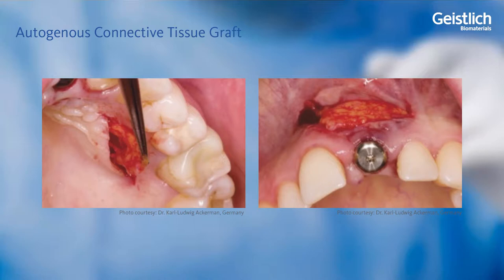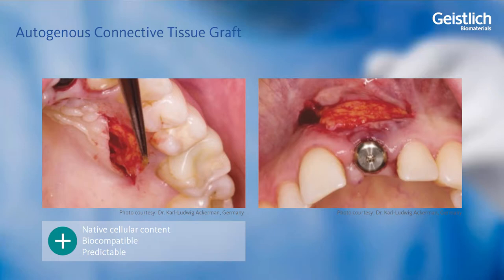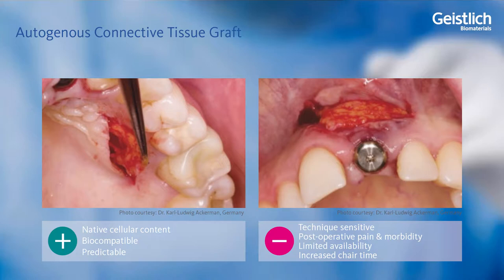The sub-epithelial connective tissue graft has been widely studied and is considered by most to be the gold standard for soft tissue augmentation. With its own native cellular content and biological substrate for tissue integration, it is the most biocompatible material for grafting procedures. However, it does require a second surgical site, which could lead to increased post-operative pain, bleeding, and other morbidities. As well, the quality and amount of tissue that can be harvested is limited by the patient's own anatomy. This second surgical procedure requires additional chair time for the practitioner and, potentially, additional post-operative visits for the patient.